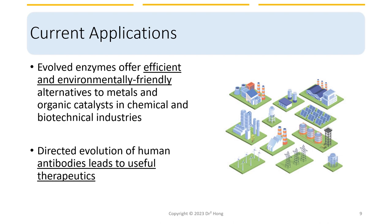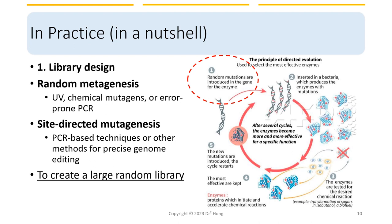Let's look at the practice in a nutshell. Directed evolution libraries are designed to contain a large number of genetic variations of a target enzyme or protein, which can then be screened for improved properties using a selection or screening process. There are several different methods for designing directed evolution libraries depending on the specific goals and constraints of the project.